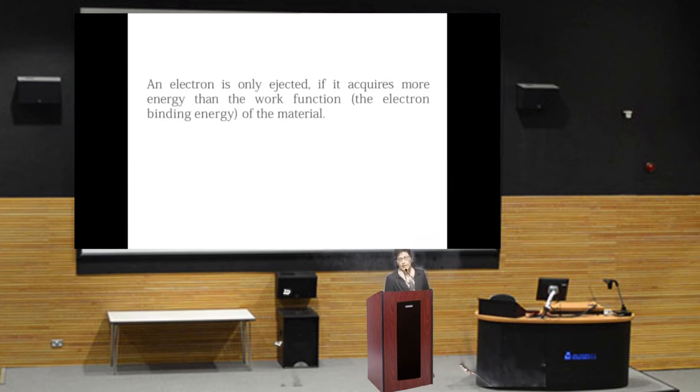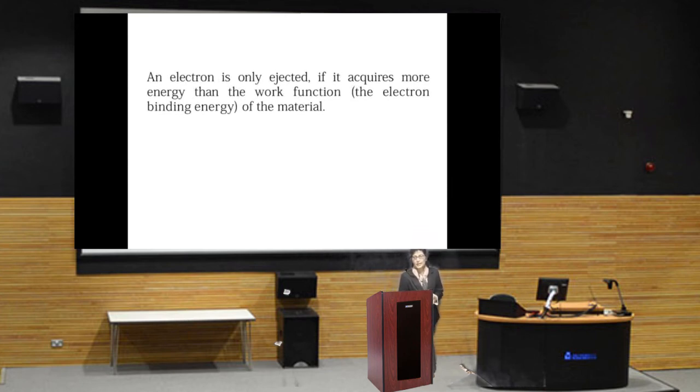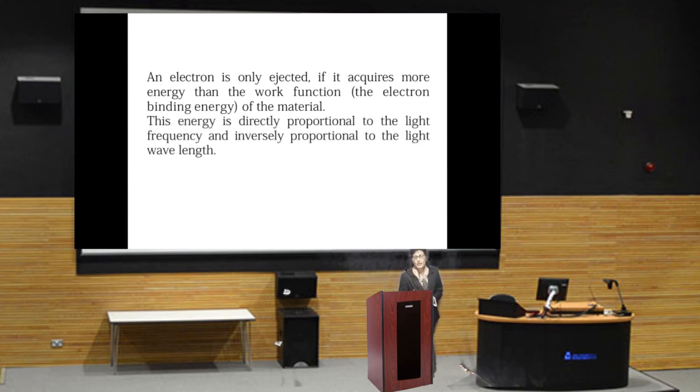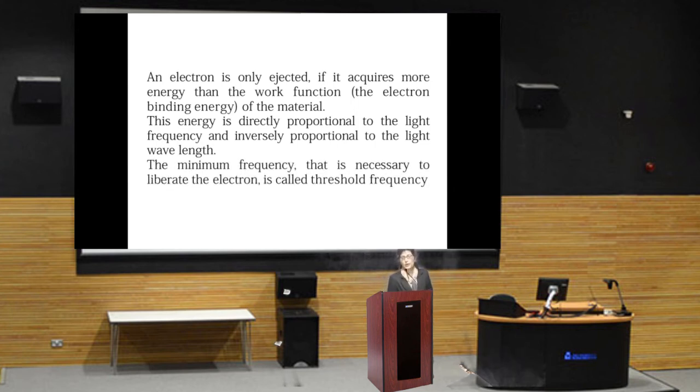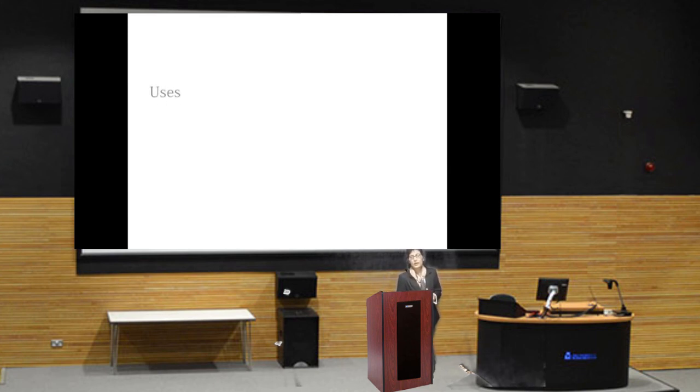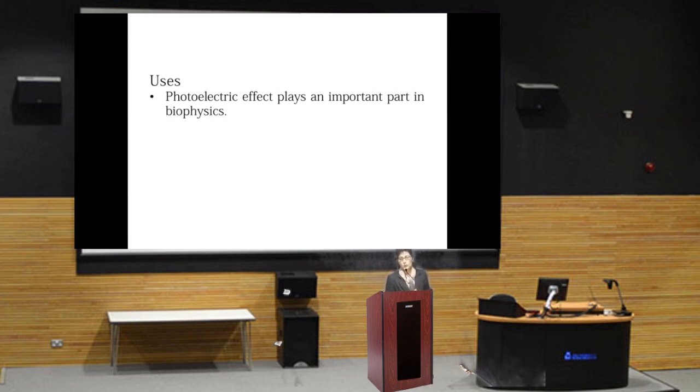The energy of light shining on the material is passed to the surface electron. An electron is only ejected if it acquires more energy than the work function. The work function is actually the electron binding energy. This energy is directly proportional to the light frequency and inversely proportional to the light wavelength. The minimum frequency that is necessary to liberate the electrons is called threshold frequency. If the absorbed energy is higher than the minimum amount of energy needed to liberate the electrons, the rest contributes to the electron's kinetic energy as a free particle.